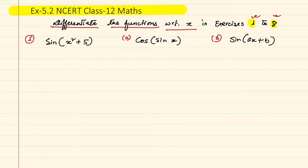The first one is sin(x² + 5). Here it is a function of function — sin is one function, and x² + 5 is also a function, that is a polynomial function. In that case, how to differentiate? Let me show the solution.